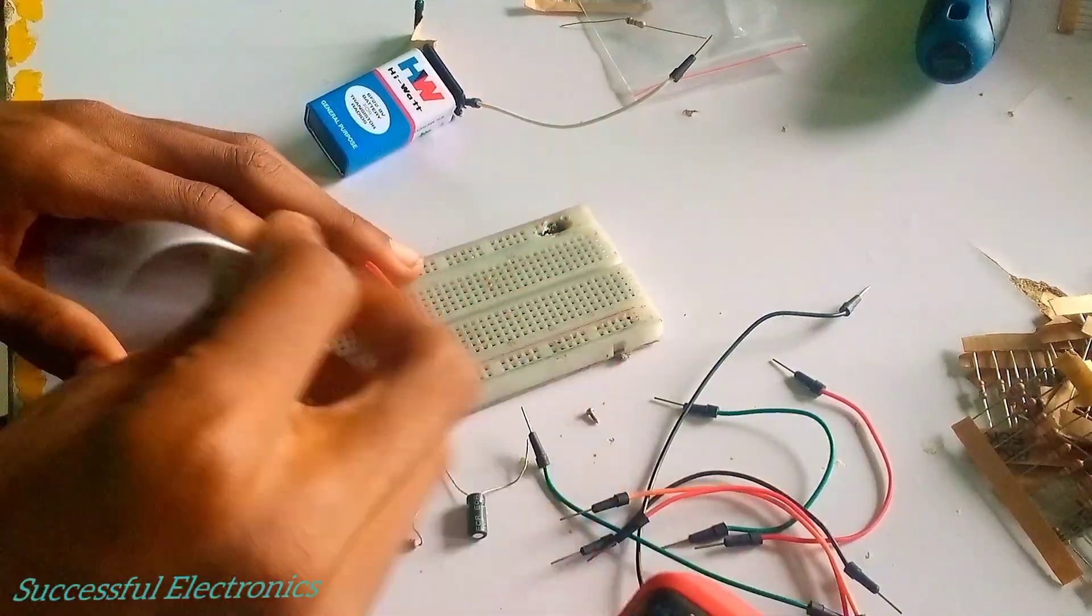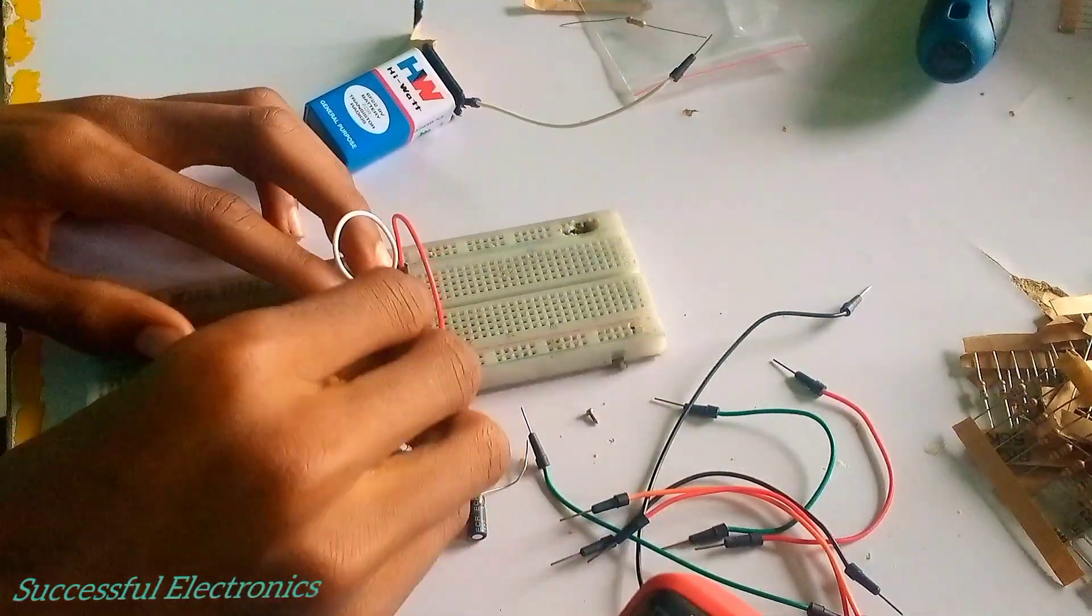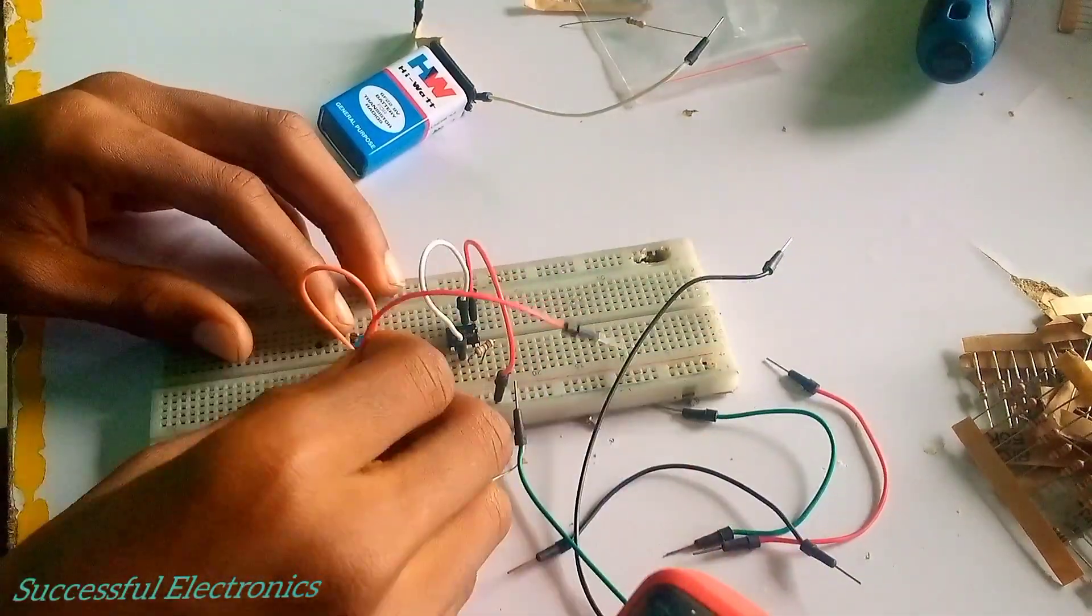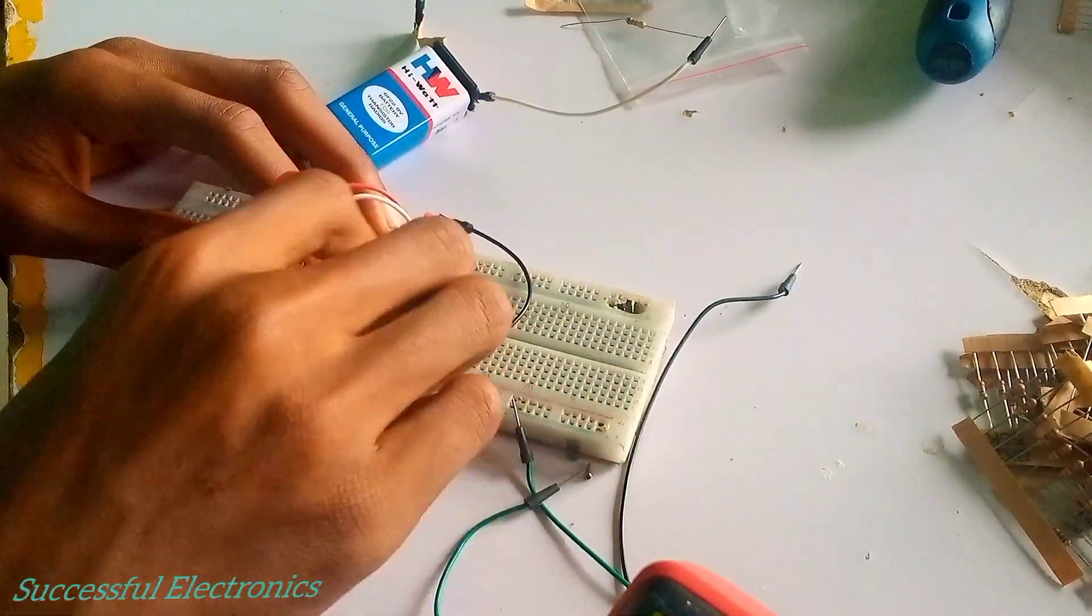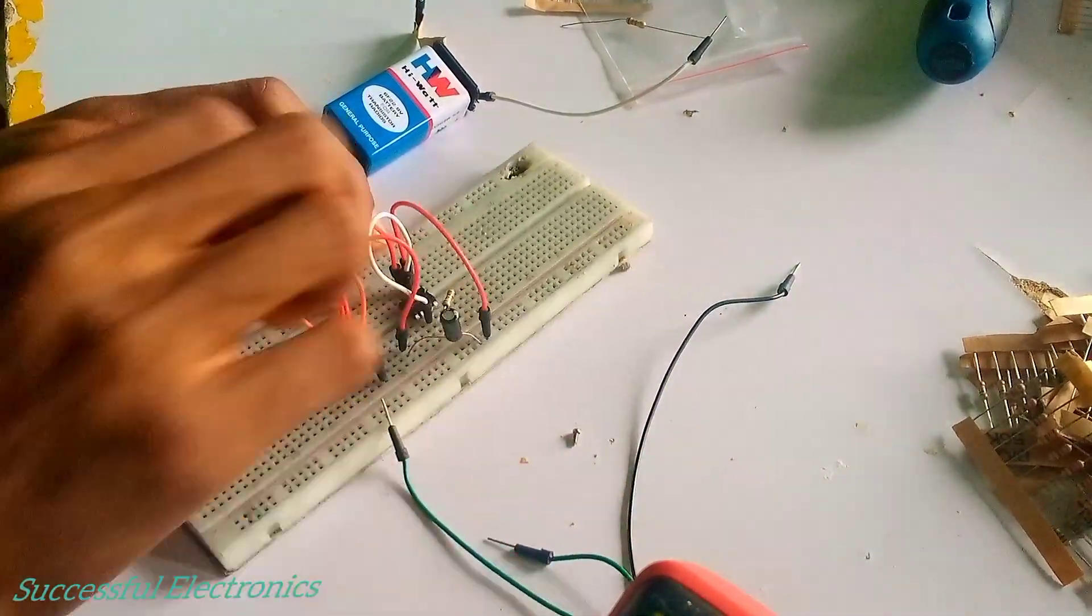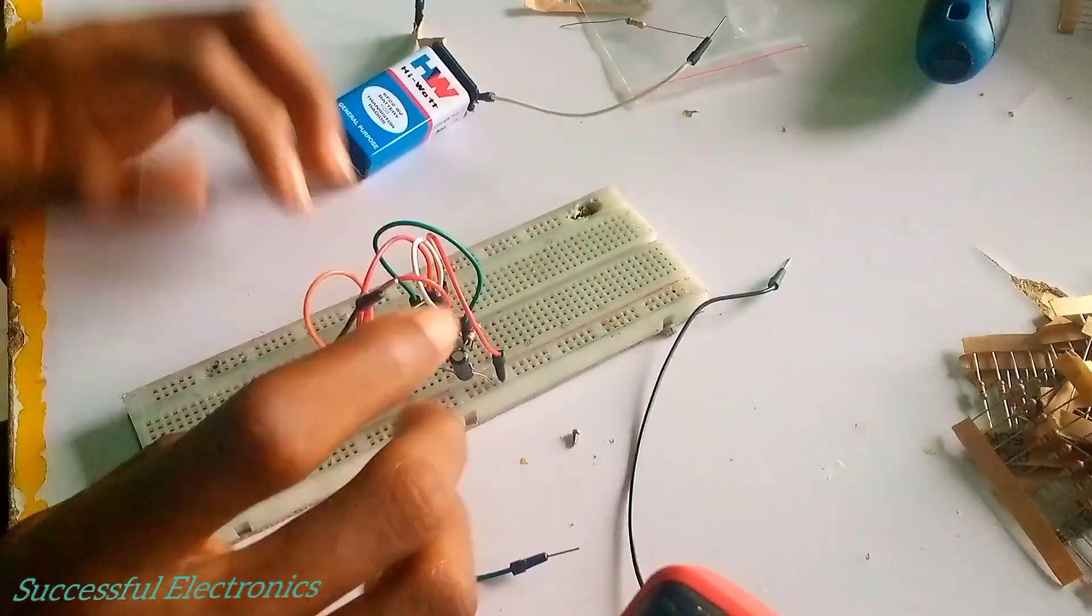You can also improve your oscillating circuit by adding a potentiometer to calibrate the frequency or the duty cycle you expect to have. Now we are done with the connections, let's test.